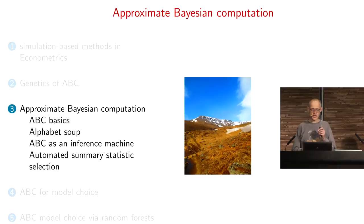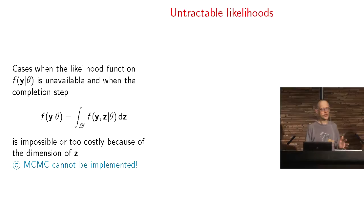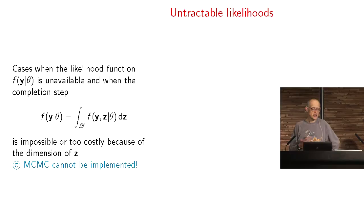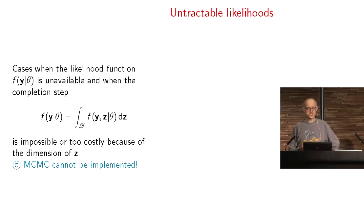I keep talking about ABC without defining it, so we'll eventually come to it. The starting point is having a likelihood that is intractable for many possible reasons. I gave an example of marginal likelihood that comes through integrating out a missing variable or auxiliary variable z. In the best situations, you can run MCMC on f(y, z) and derive simulations from y. However, if the dimension or structure of z is too complex, this is not possible. There are other cases where the likelihood function contains an intractable term.